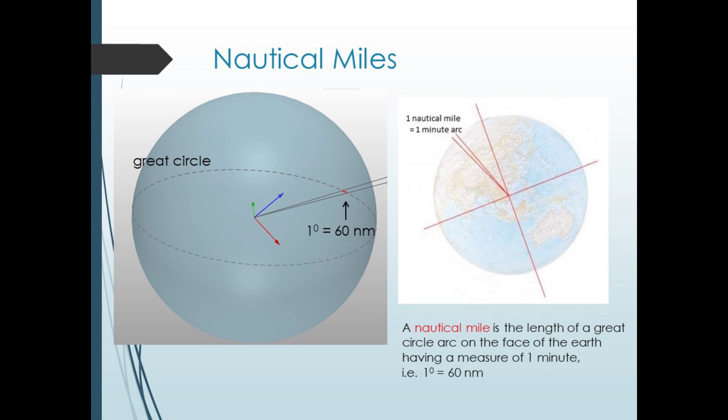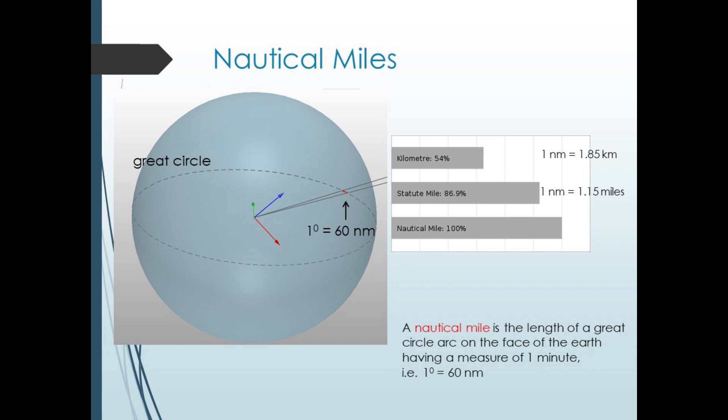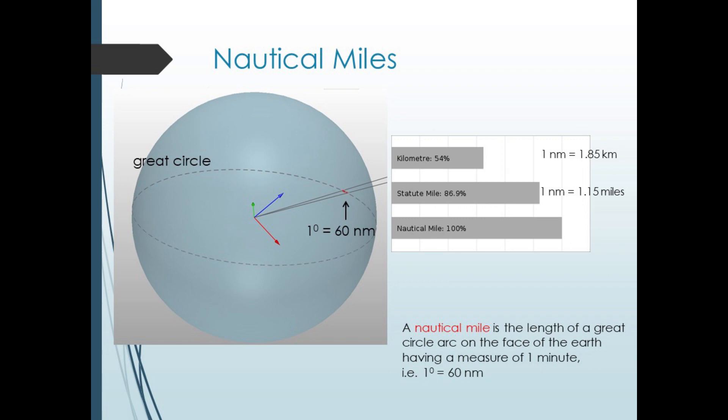The other standard we'll use in this video is nautical miles for distance. Nautical miles are based on measuring distance along an arc of a great circle. A great circle arc which measures one minute will have an arc length of one nautical mile. More equivalently, an arc which measures one degree will have an arc length of 60 nautical miles. A nautical mile is slightly larger than a statute mile and nearly twice the length of a kilometer.